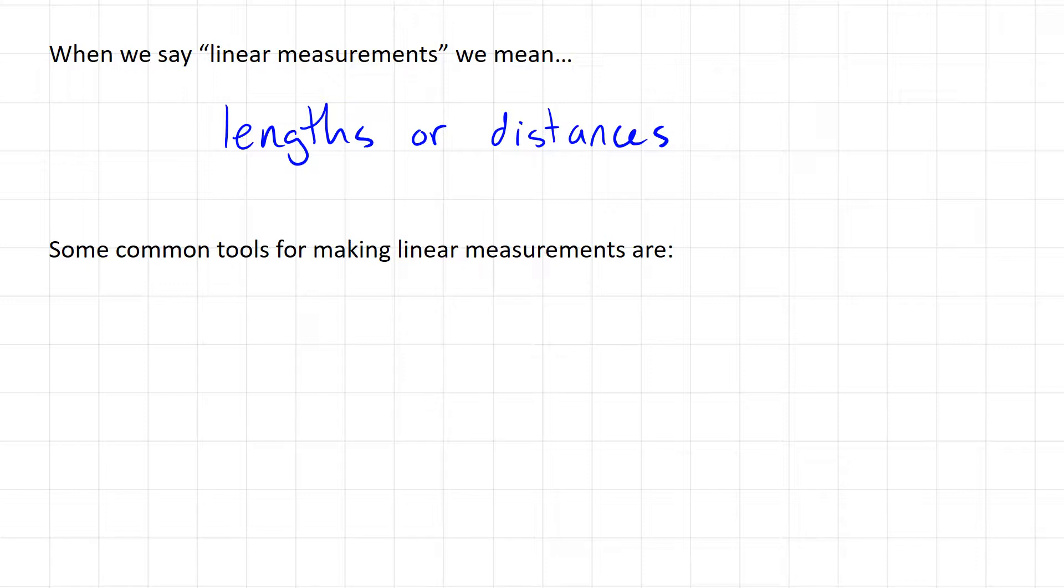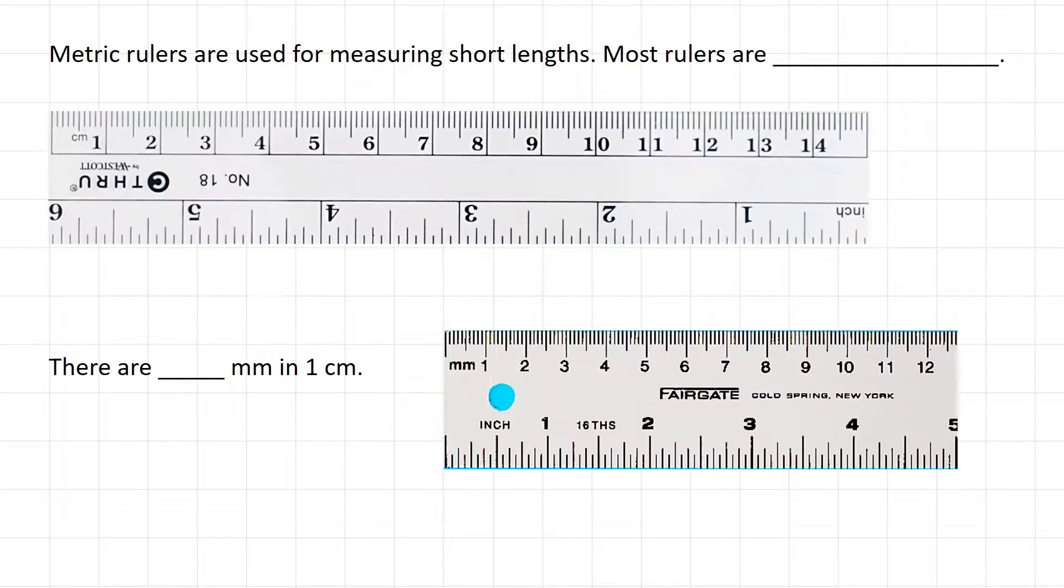Some common measuring tools include a ruler, measuring tape, or an odometer, which is what you have in a car that measures the distance that your car has traveled.